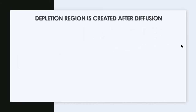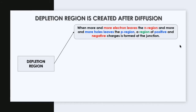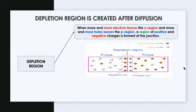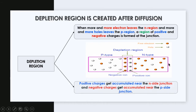After diffusion happens, a depletion region is created. The depletion region forms when more and more electrons leave the N region and more and more holes leave the P region. A region of positive and negative charges is formed at the junction — positive charges accumulate near the N side junction and negative charges accumulate near the P side junction.